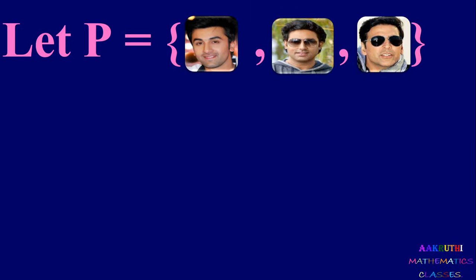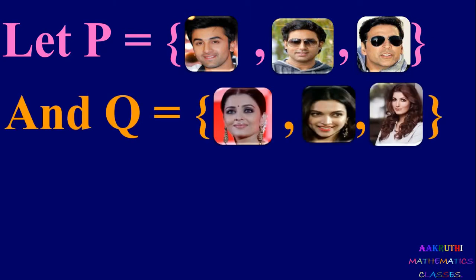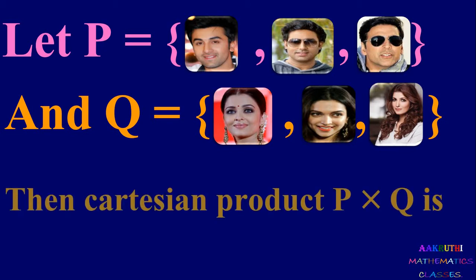Consider set B with Ranbir Kapoor, Akshay Kujan and Akshay Kumar, and set Q with Aishwarya Rai, Deepika Padukone and Winkel Kanna. We start to find the Cartesian product. Set B has three elements and Q has three elements. Total number of elements in Cartesian product is 3 into 3, which is 9. So in Cartesian product, we have 9 elements.